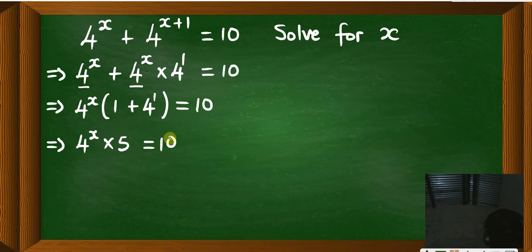Then from there, you get rid of the 5, so you say divide by 5 here, and divide by 5 here, so that this one and this one goes.